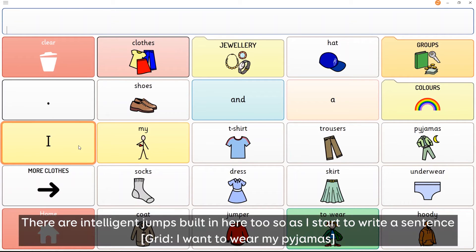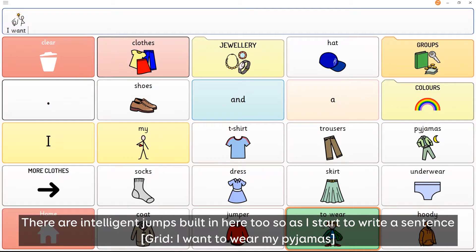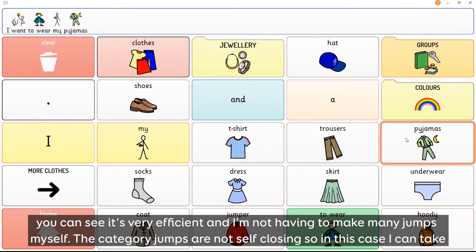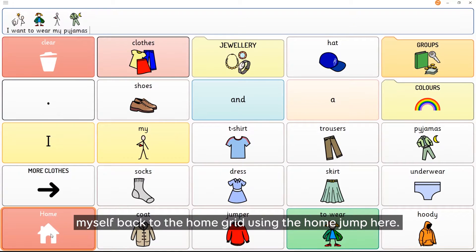There are intelligent jumps built in here too so as I start to write a sentence: I want to wear my pyjamas. You can see it's very efficient and I'm not having to make many jumps myself. The category jumps are not self closing so in this case I can take myself back to the home grid using the home jump here.